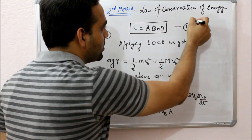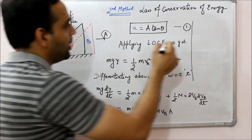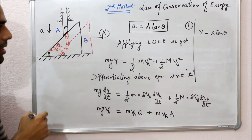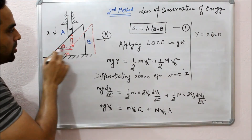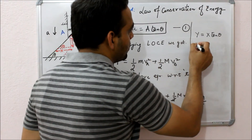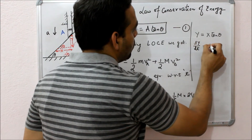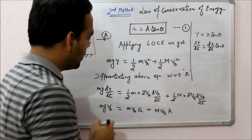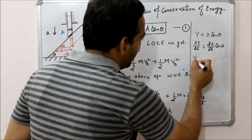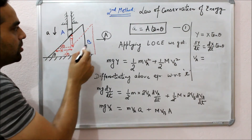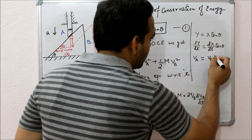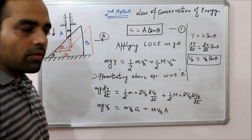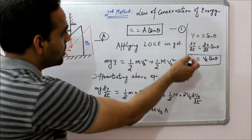Now we can relate the velocity of the rod with the velocity of the wedge through the wedge constraint relation. We know that the wedge constraint relation for the rod and wedge system is Y equals X tanθ. If you consider this triangle, tanθ equals Y upon X, so the vertical displacement of the rod is related to the horizontal displacement of the wedge. Differentiating with respect to time we get: dY/dt equals dX/dt multiplied by tanθ. So Va equals Vb·tanθ. This is the relation between the velocity of the rod and the wedge. Let this be equation number 2.